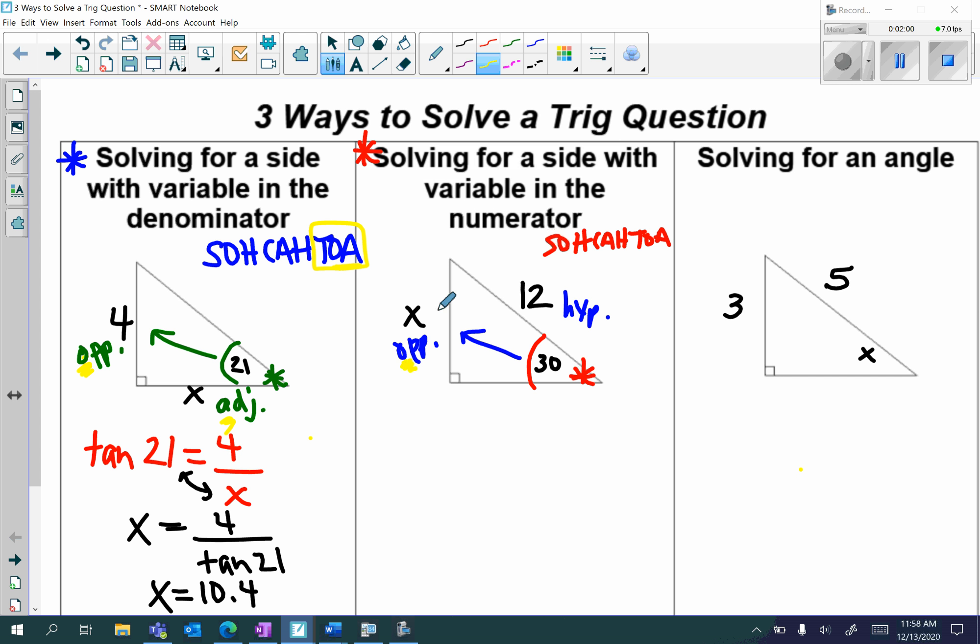x, I have an O, and I have an H. OH, which part of SOHCAHTOA has OH? The SO part, which is sine. So I'm going to have sine of 30 is equal to opposite, which is x, over the hypotenuse, which is 12. Put this all over 1 and cross multiply.